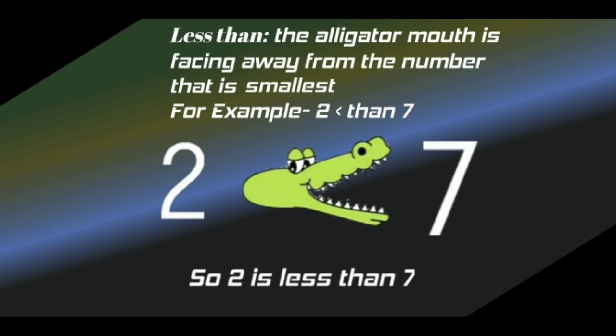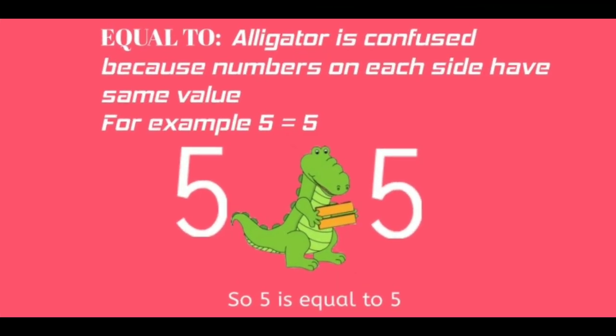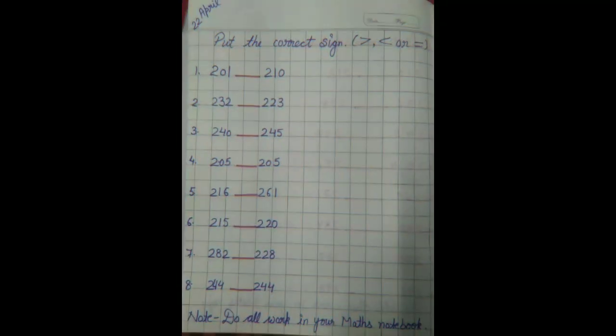For example, 2 is less than 7. Now, equal to — the alligator is confused because the numbers on each side have the same value. You can see 5 and another 5; both digits are equal, so we use the equal sign.